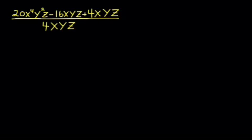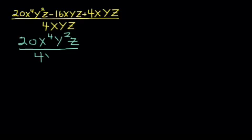Again, 3 terms on top, 1 on the bottom. We're going to rewrite them 20x to the 4th, y squared, z. And write it over the denominator, 4xyz.